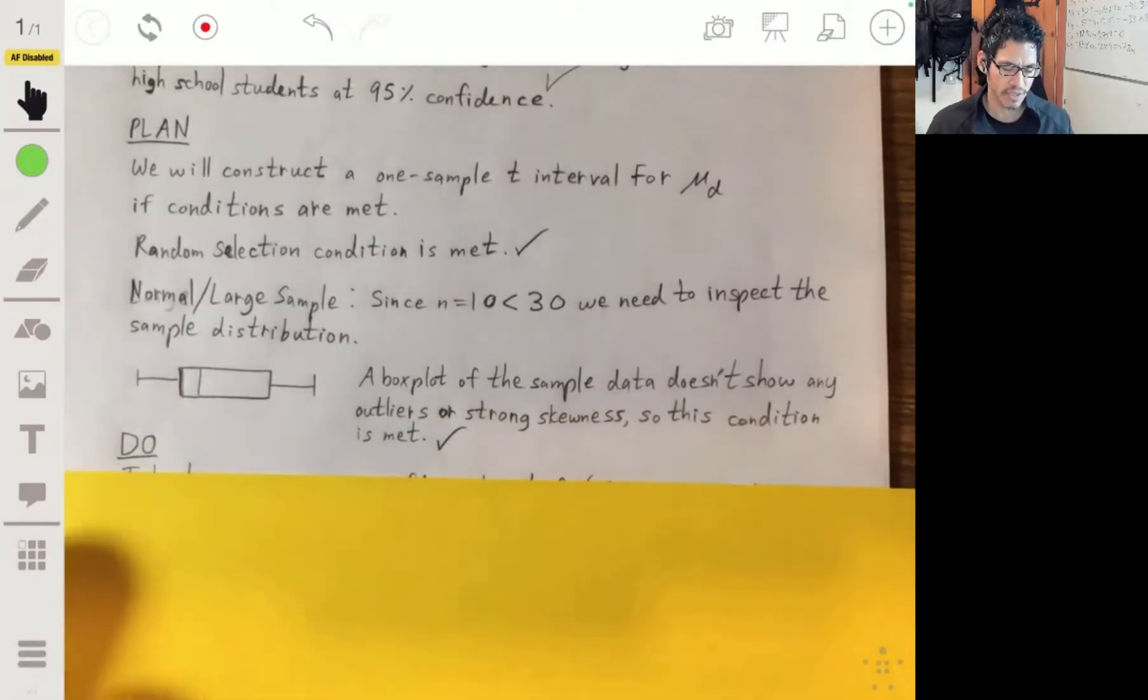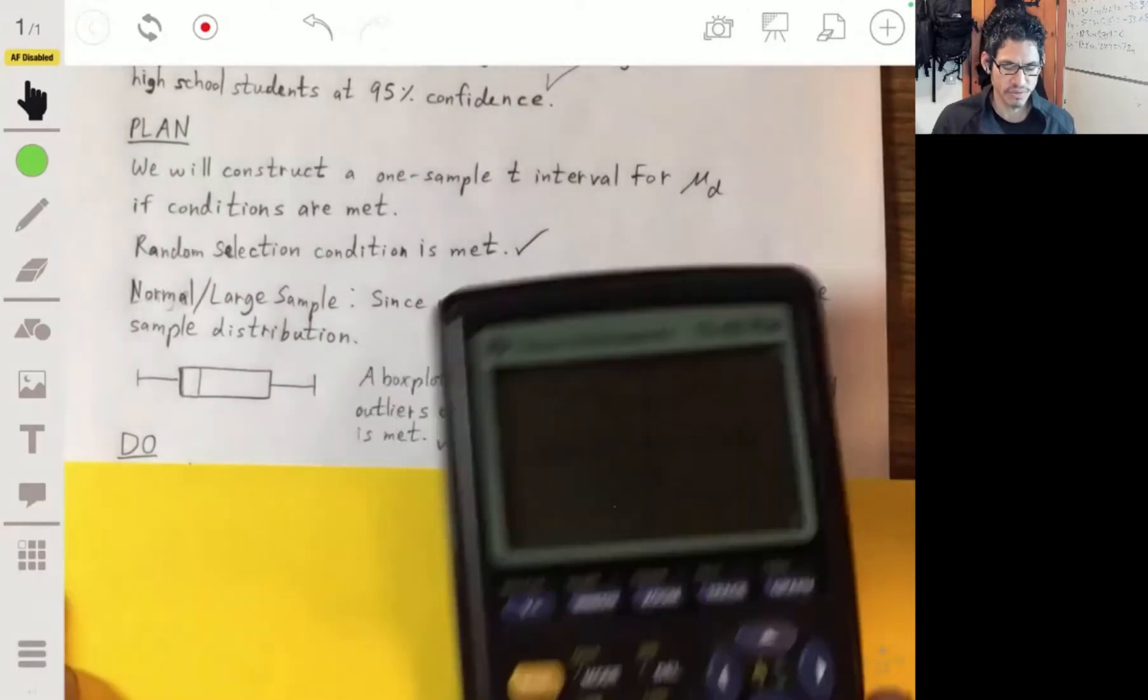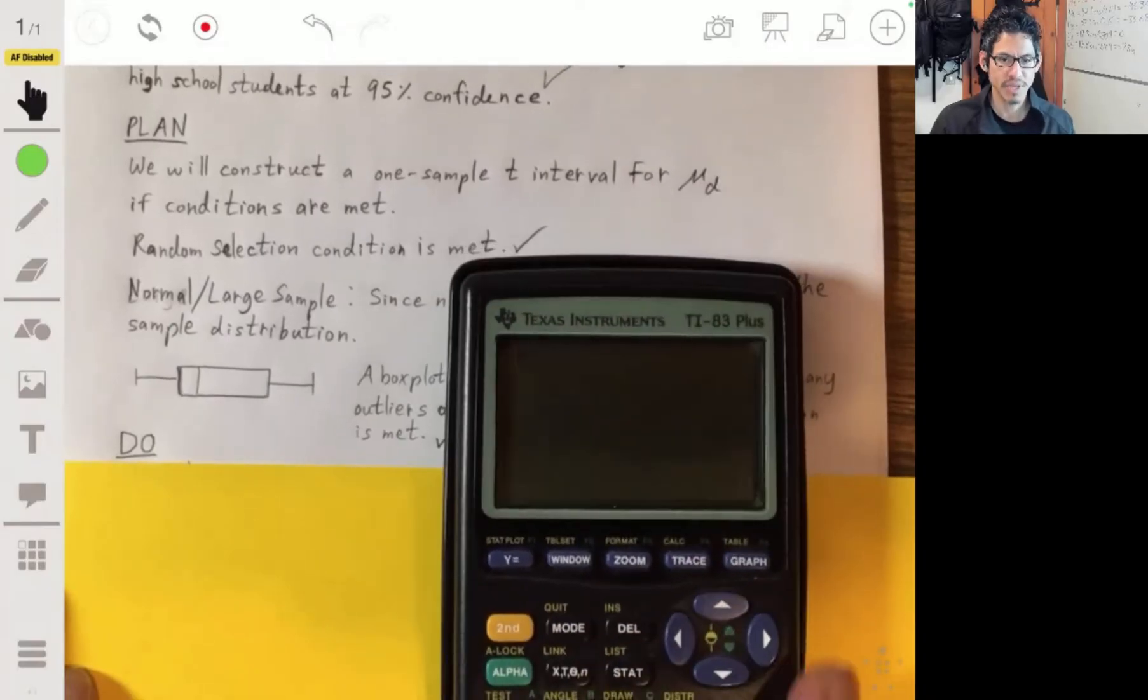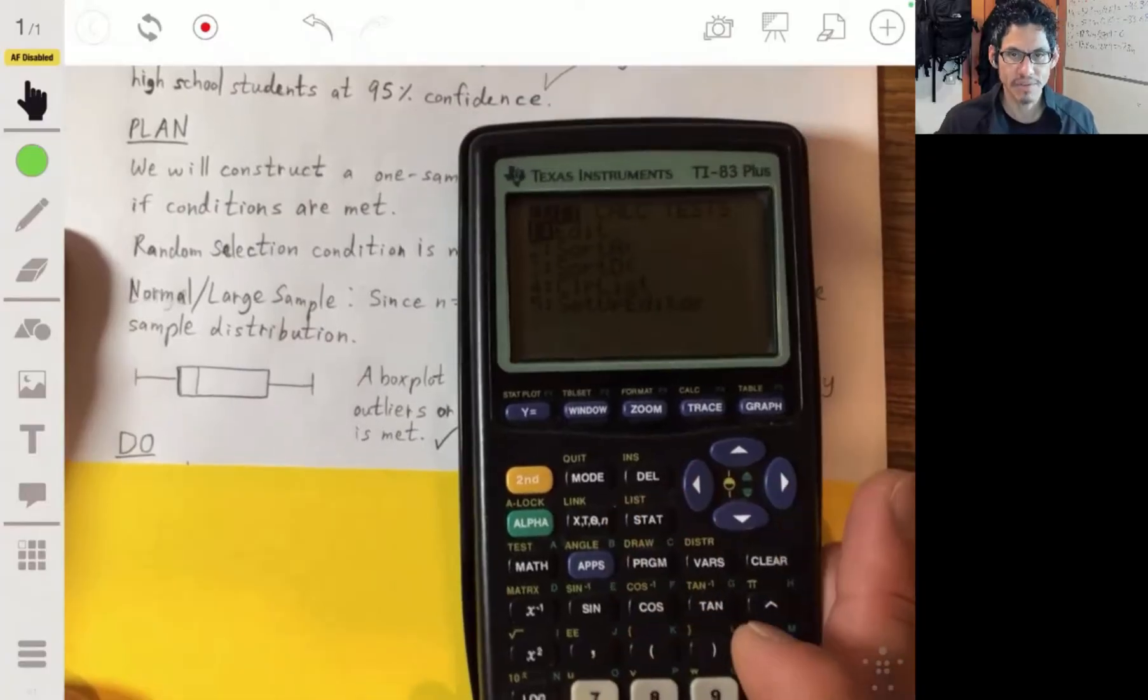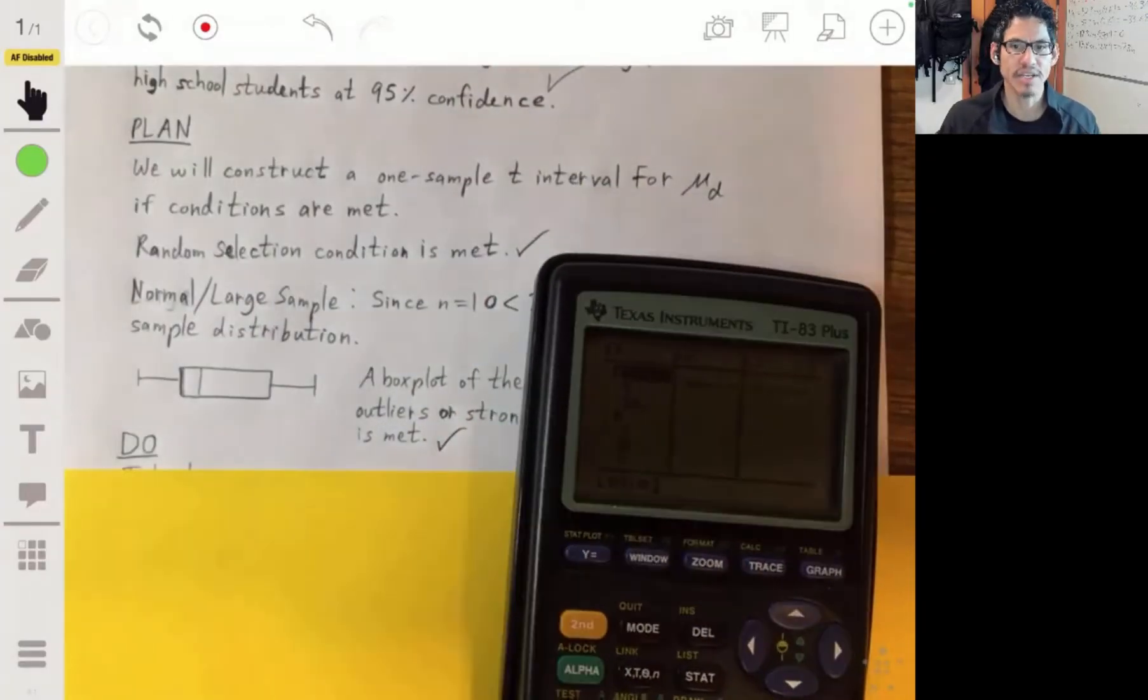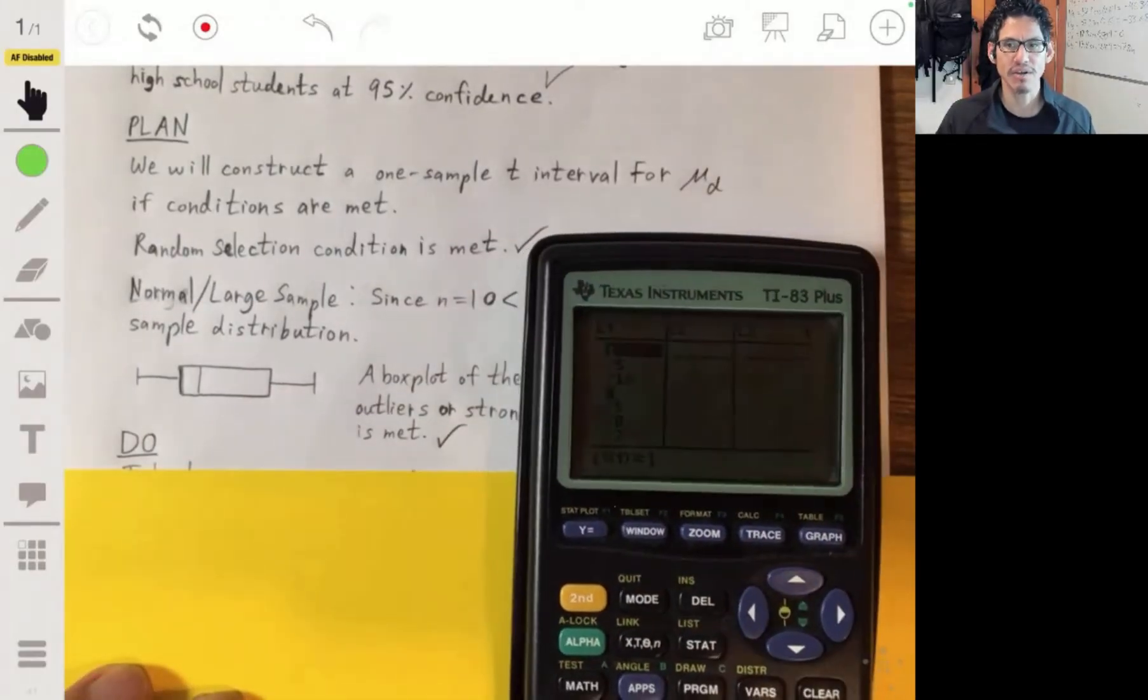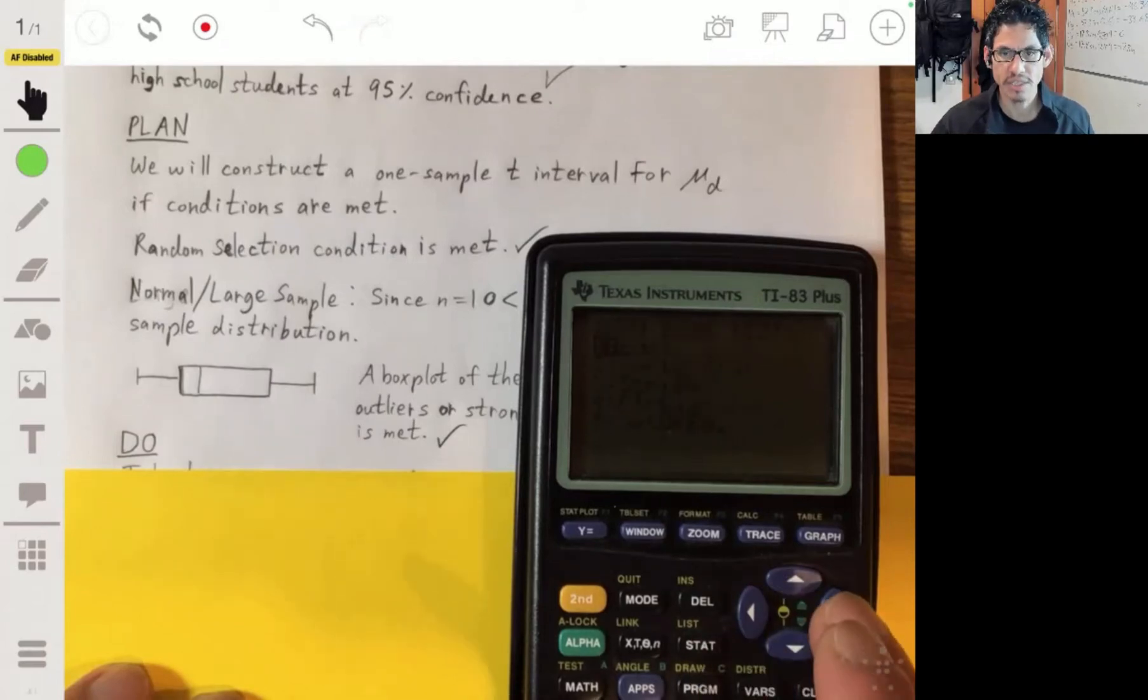And then we just do the calculation. So what I usually will do and teach my students come the AP exam time is just how to do these calculations in your calculator. So I already have the data in here. From here, if you have the data, you can just calculate a 95% confidence interval. Go to stat, go to test, and go to T-interval right here.